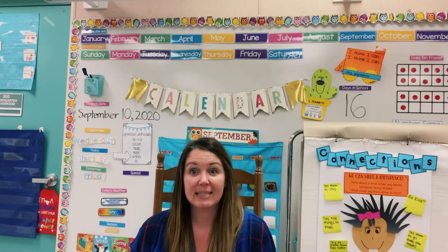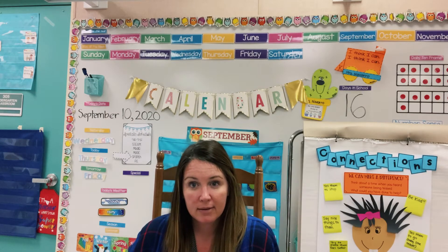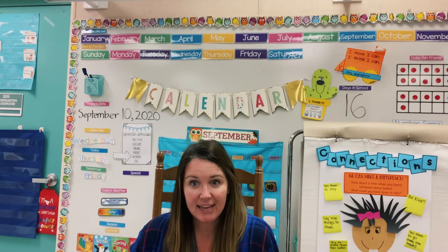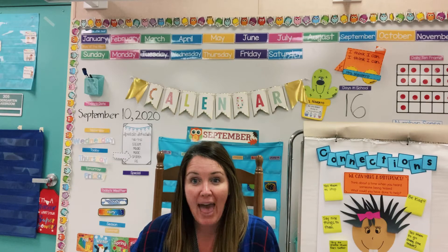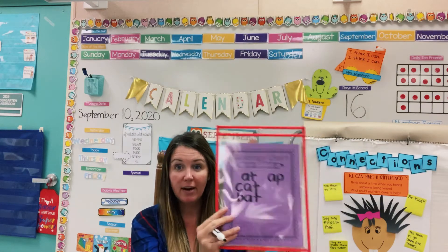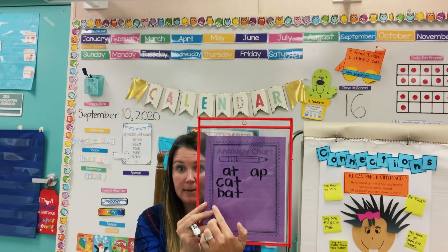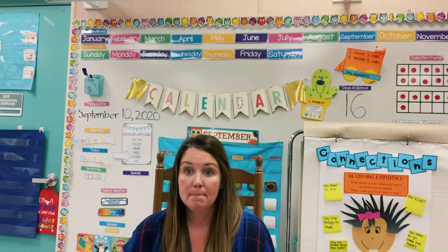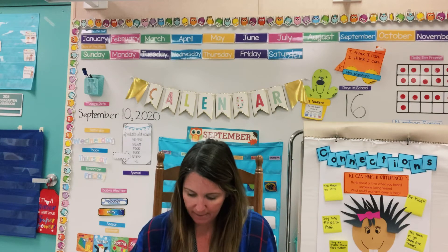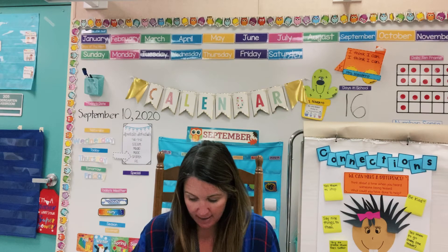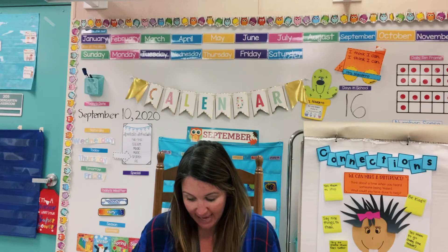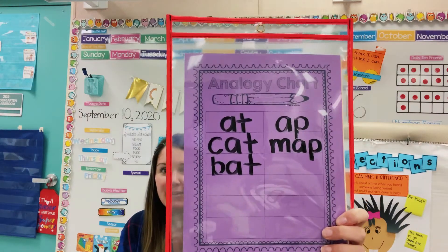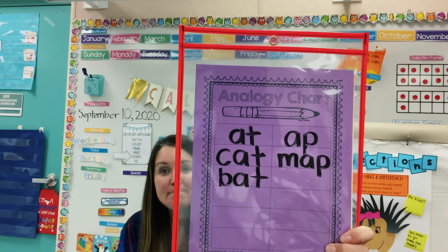My next word is 'map.' I used a map to help me on a hike. M-a-p. See if you can figure out where you would write map — is it in the 'at' family or the 'ap'? I'm going to go ahead and write mine down and let's see how you do. M-a-p. Map.